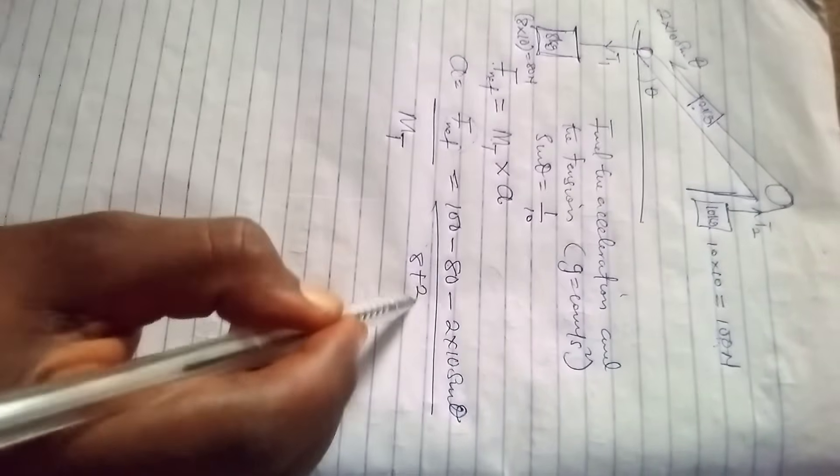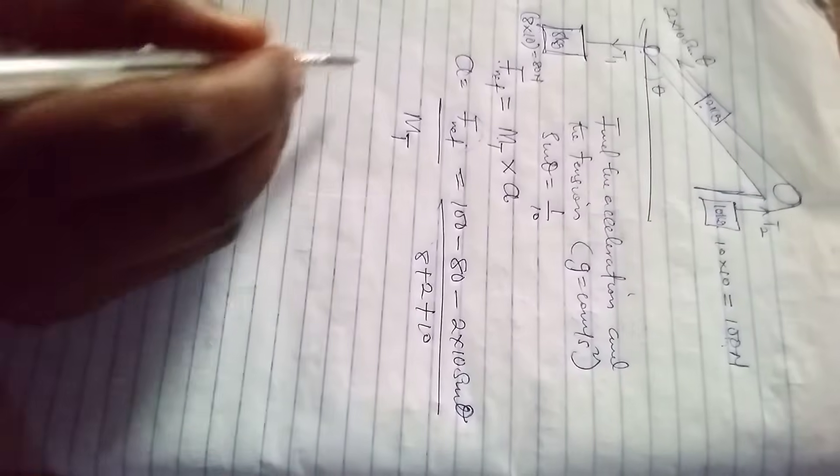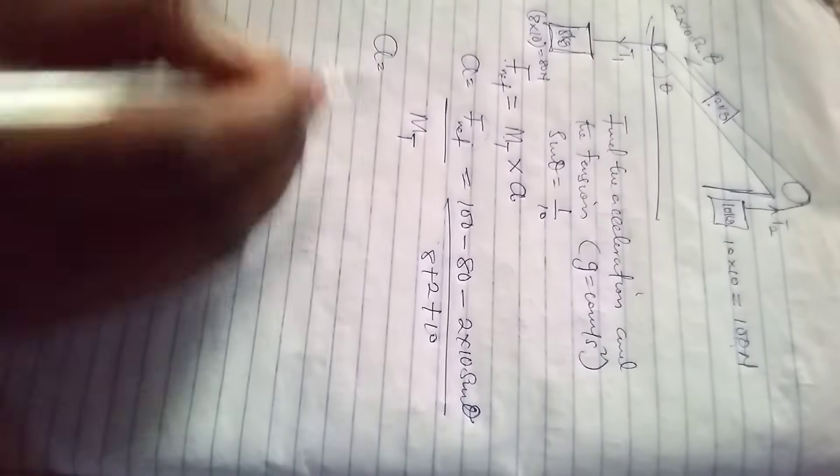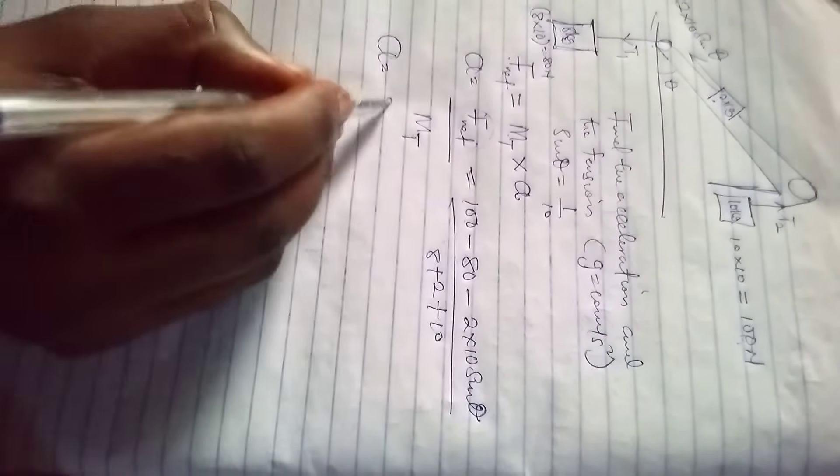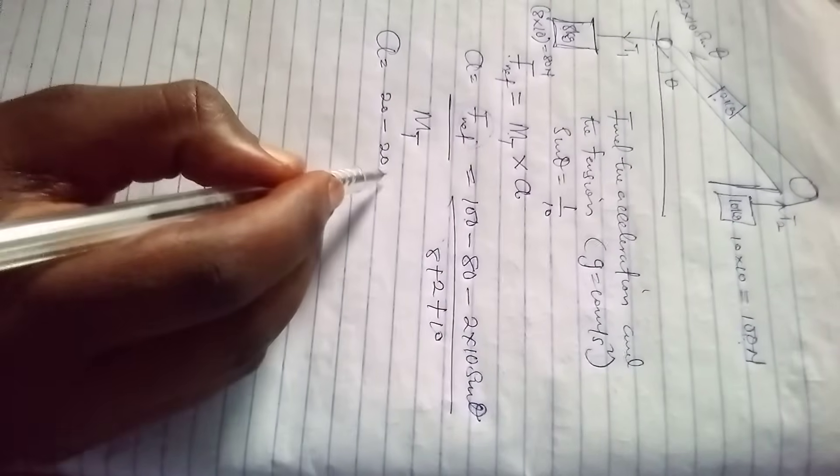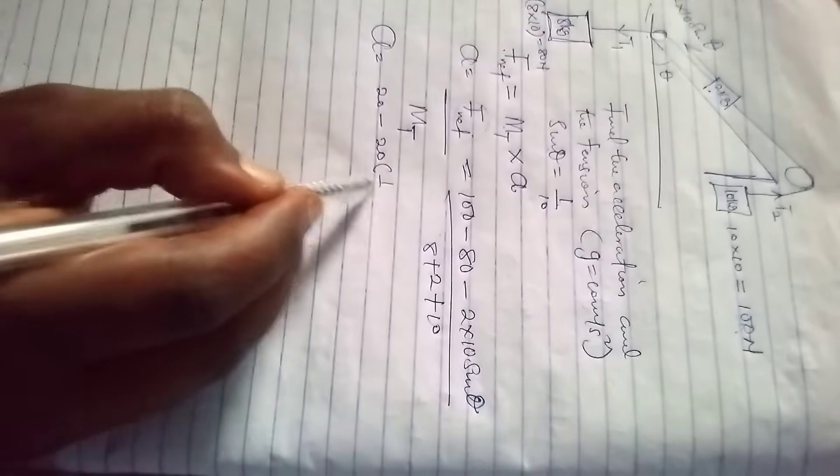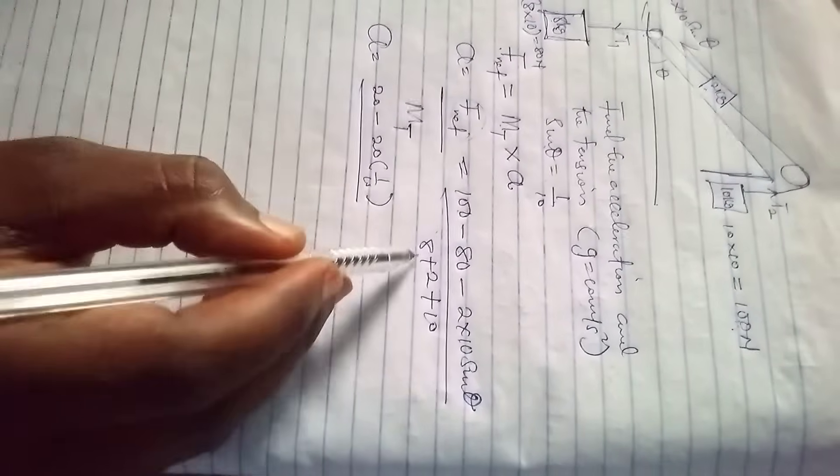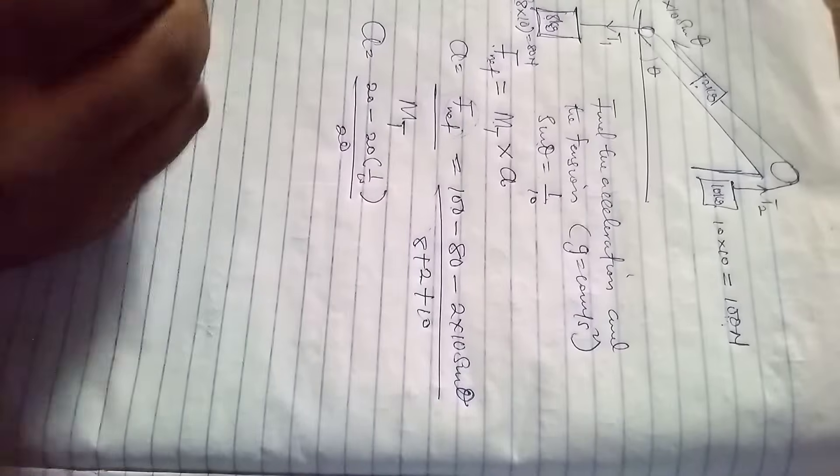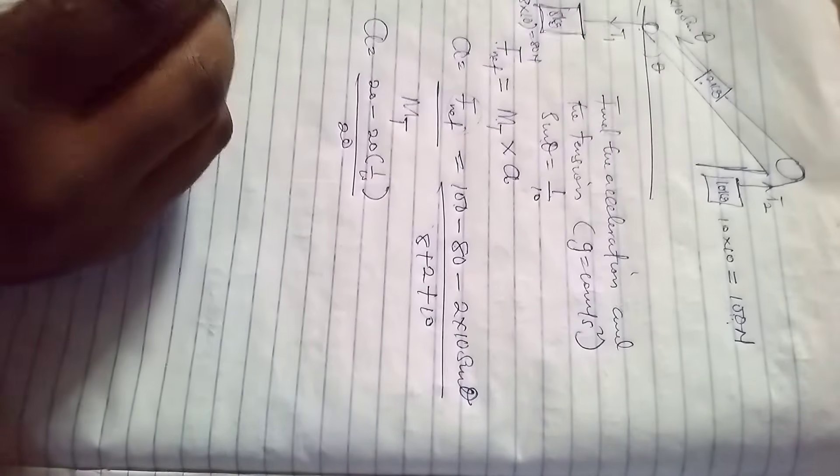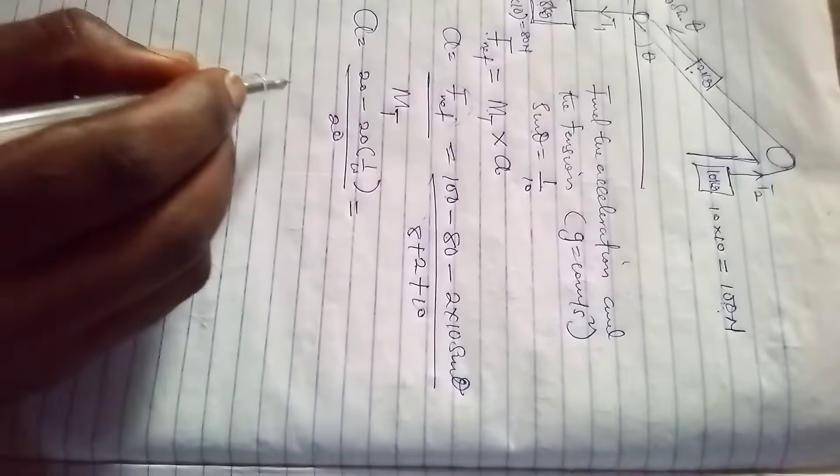2 times 10 sine theta over, what is the total mass? The total mass is 8 plus 2 plus 10. So what do we have?